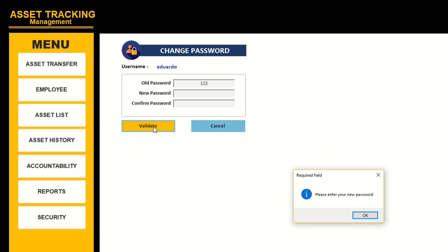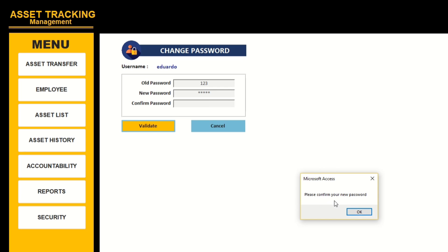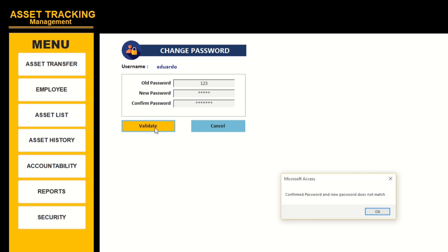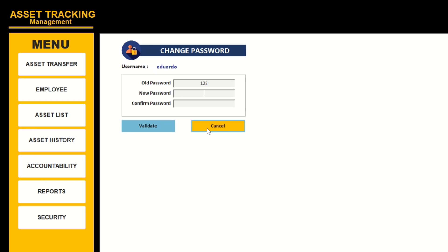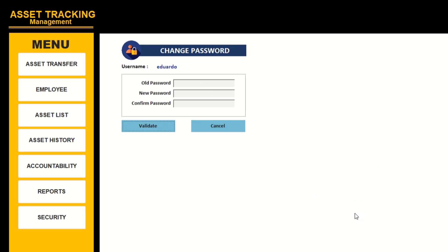Click Validate. Please enter your new password - let's type one two three four five. Next, please confirm your new password. Let's type the wrong one. Validate: confirm password and new password does not match. So let's type the correct one - one two three four five - click Validate. Successfully changed! To learn how to do this, please watch this video until the end and don't forget to subscribe.